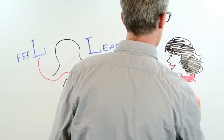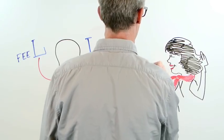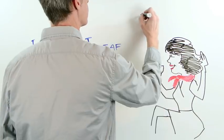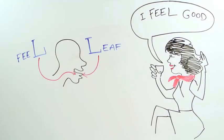This is a change so subtle you probably can't even hear or feel the difference. But you can hear it when someone fails to make the change. Italian only uses the light L and not the dark L. So, I feel good becomes I feel good.